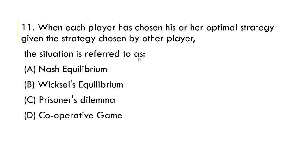Next: when each player has chosen his or her optimal strategy given the strategy chosen by the other player, the situation is referred to as Nash equilibrium. Option A is correct.